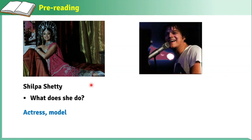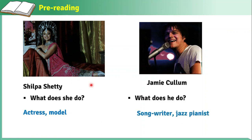Another one — who is he? He is Jamie Cullum. What does he do? What is his job? He is a songwriter and he is a jazz pianist — a person who plays piano. Both of them have two jobs. Shilpa is an actress and also a model. Jamie Cullum is a songwriter and a jazz pianist.